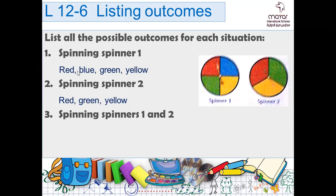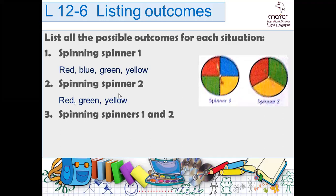You've finished red, so go to the next color — blue. Blue with red, blue with green, blue with yellow. Continue: green with red, green with green, green with yellow. Then yellow with red, yellow with green, yellow with yellow.